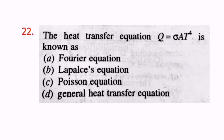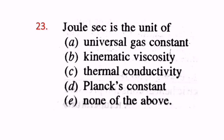Question 21: Nusselt number is expressed by the coefficient of heat transfer multiplied by inside diameter divided by thermal conductivity. D is the correct answer. Question 22: The heat transfer equation Q = σAT⁴ — none of the given options (Fourier's equation, Laplace, Poisson) are correct. Question 23: Joule second is the unit of Planck's constant. D is the correct answer.